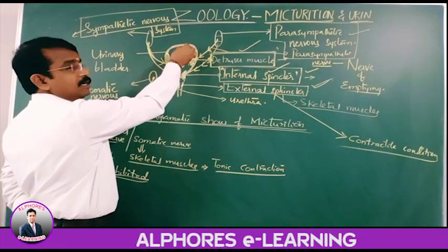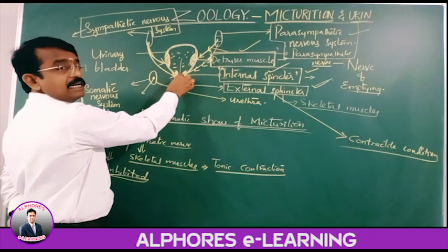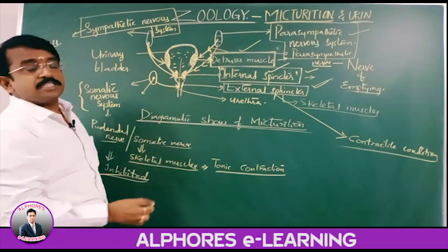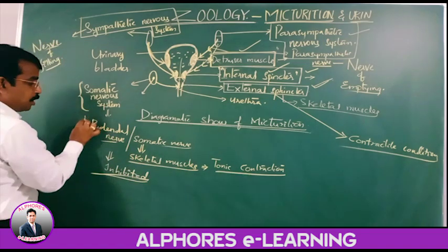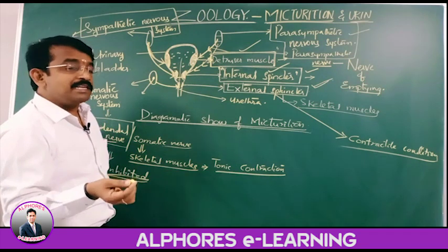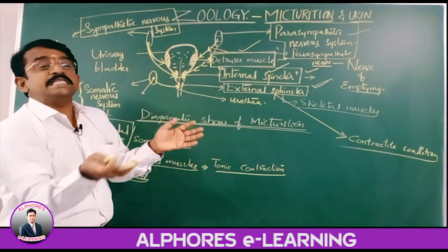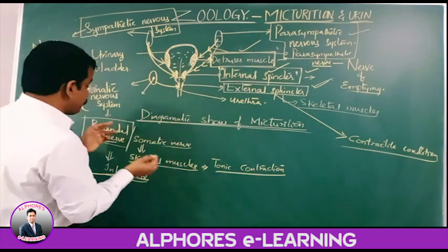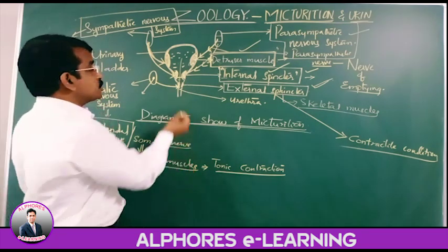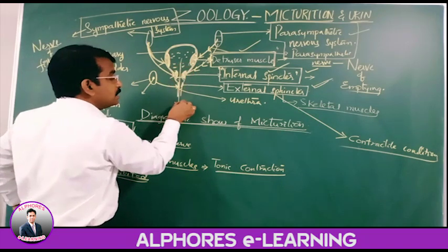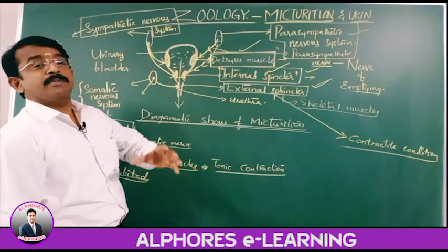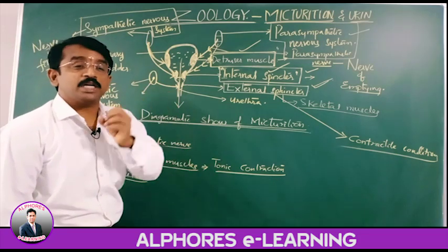So when the urinary bladder wall is contracted, the internal sphincter is relaxed, and the external sphincter — from the pudendal nerve being inhibited — has no signal, meaning it is inhibited from contraction, so it is relaxed. The pudendal nerve signal is in a relaxed state, and the urine is expelled out. This is what is named micturition or urination.